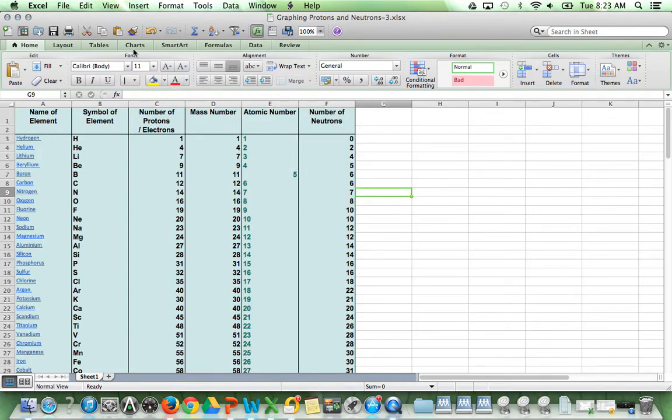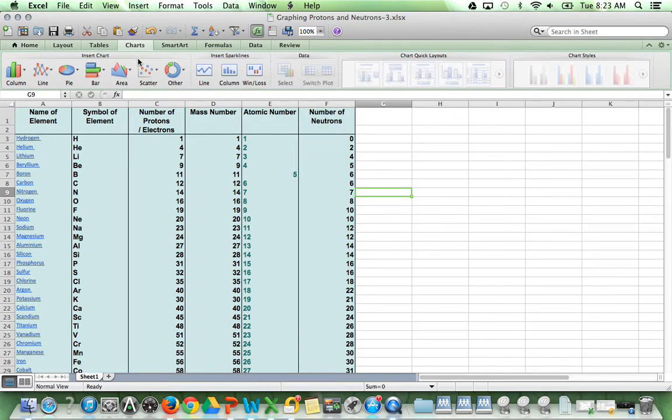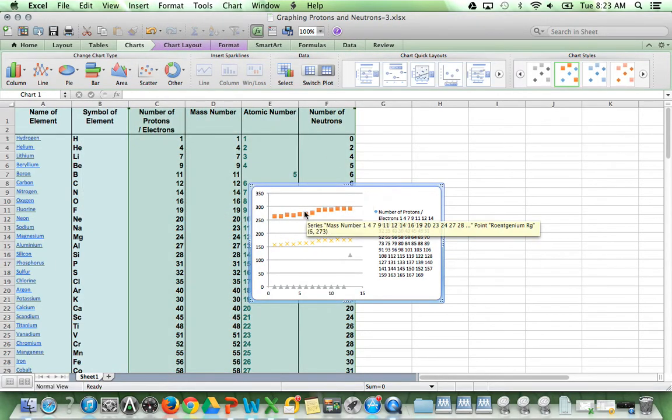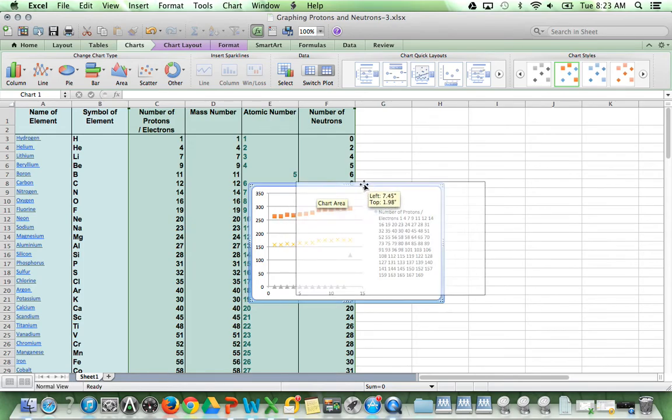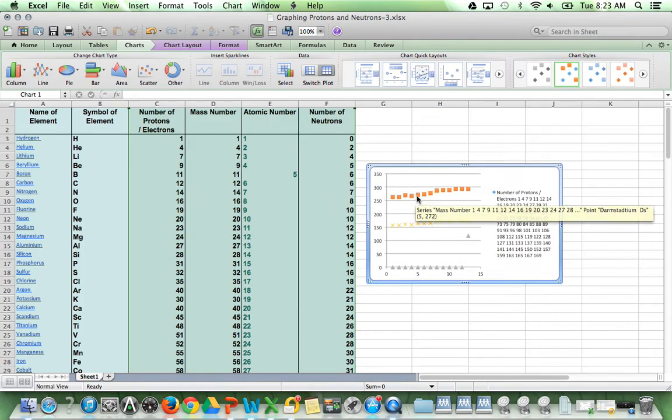Let's get to work. First thing, click on Charts, Scatter, Mark Scatter. Excel, as typical, will automatically input some data, which is incorrect.